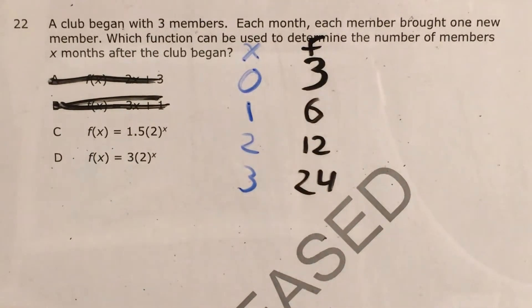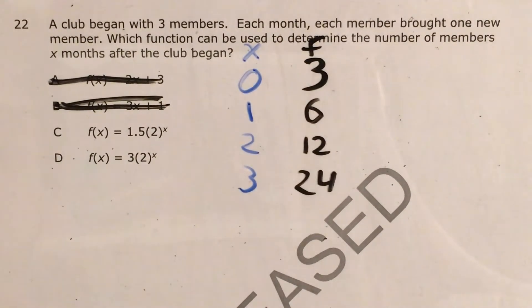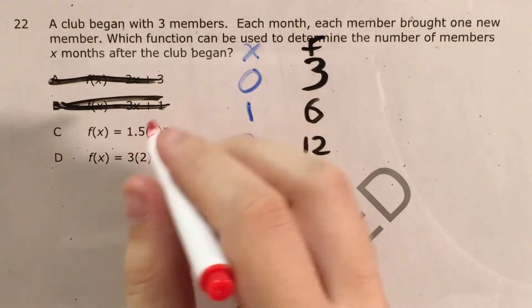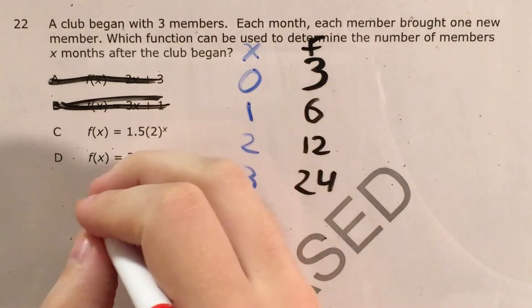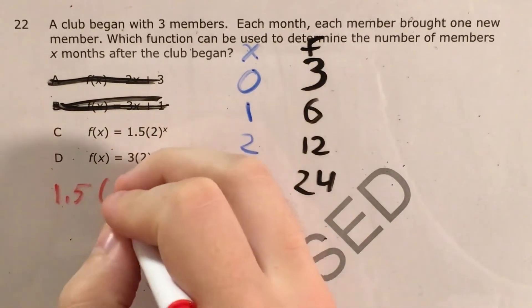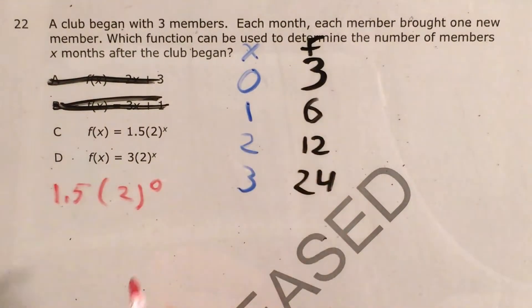And it's at this point that the easiest way to solve this and narrow it down between choice C and choice D is to think about what it means to raise something to the zero power.